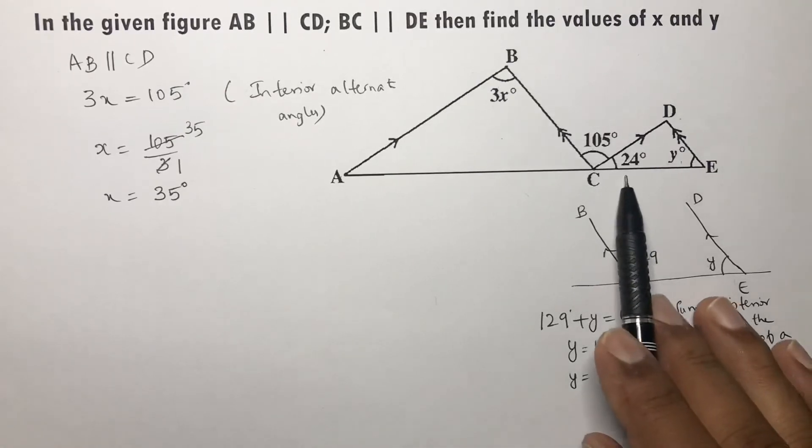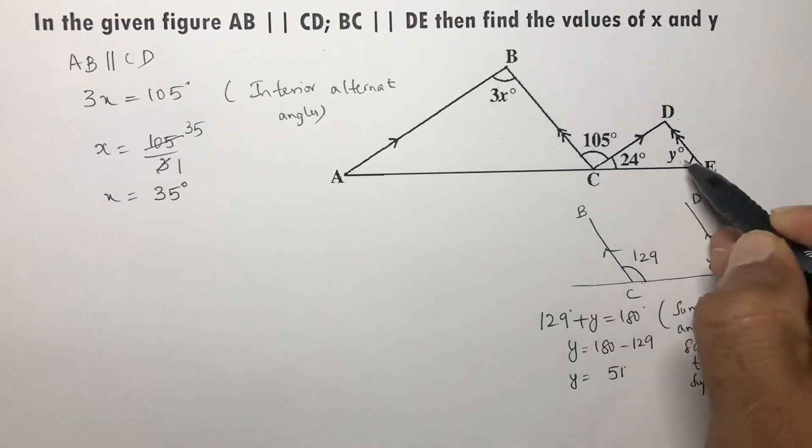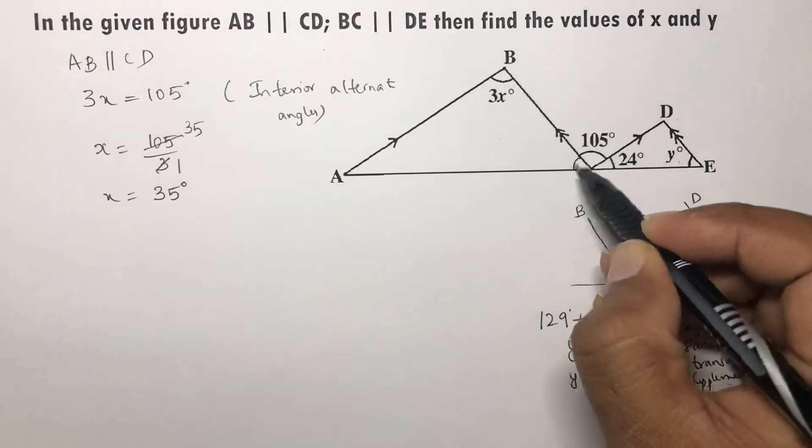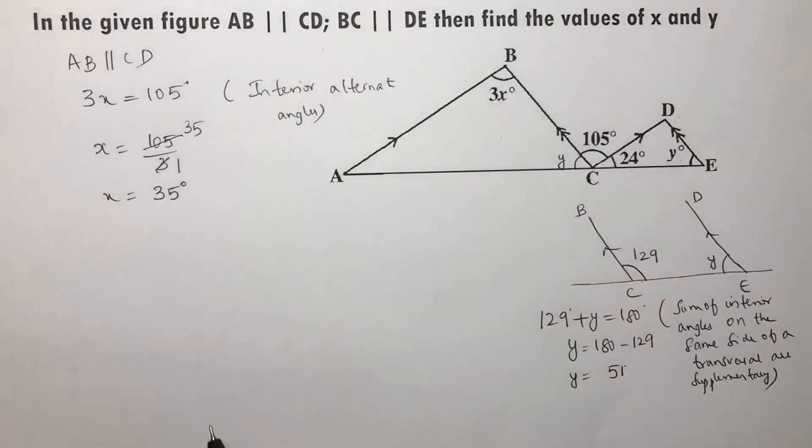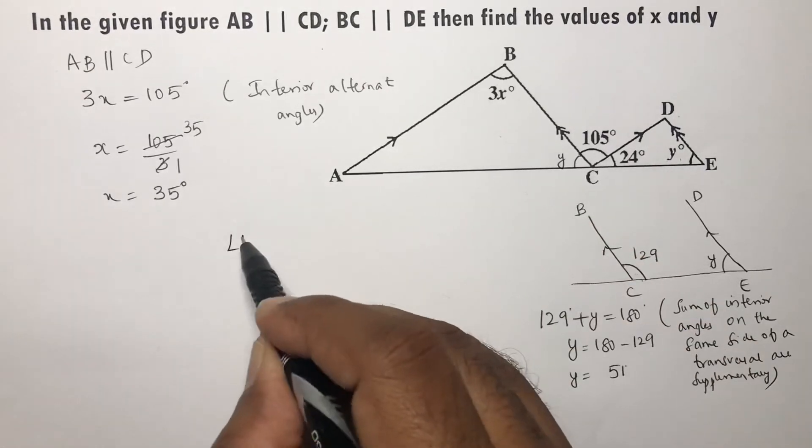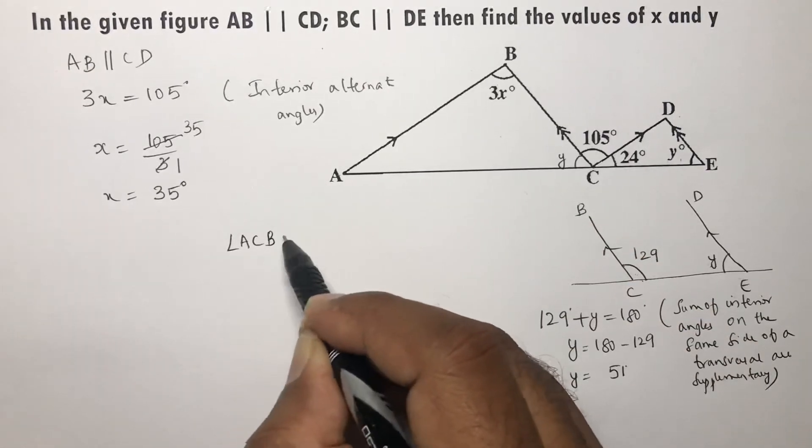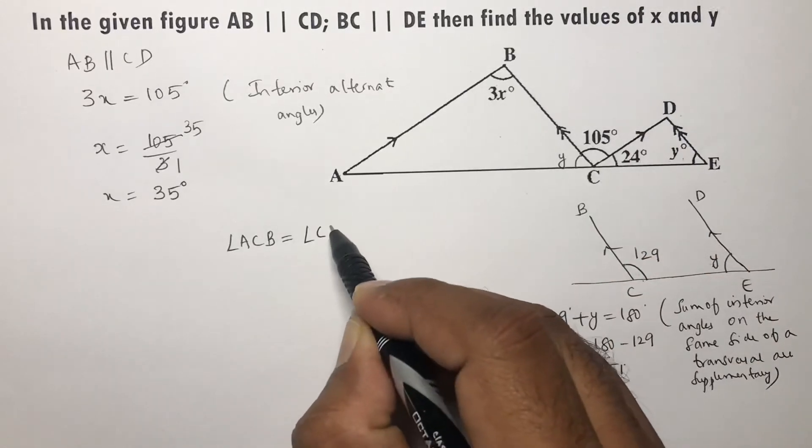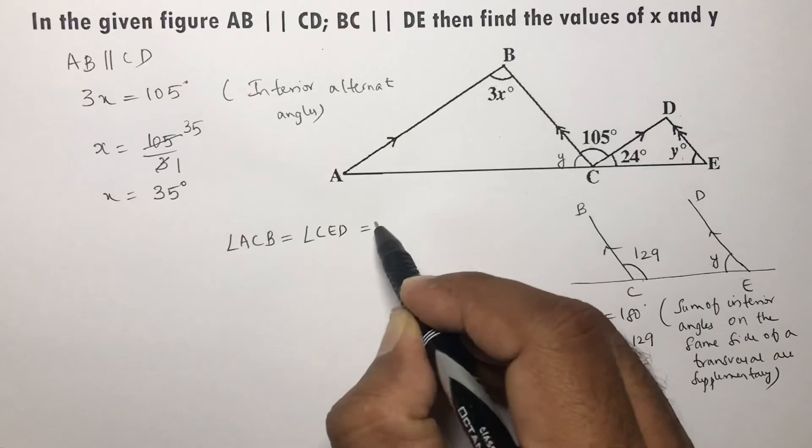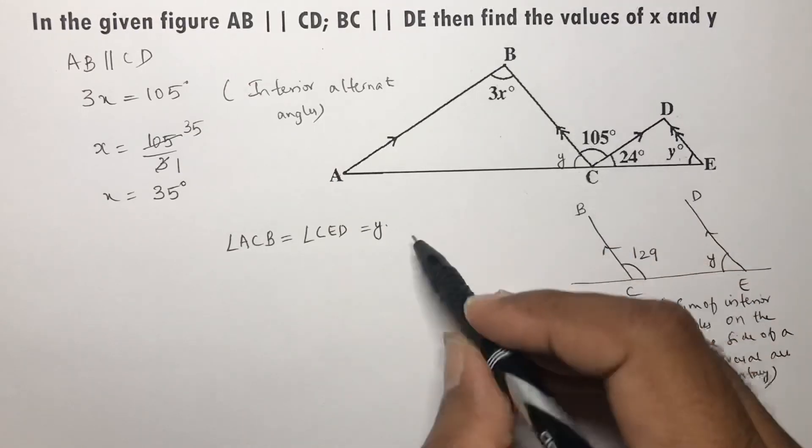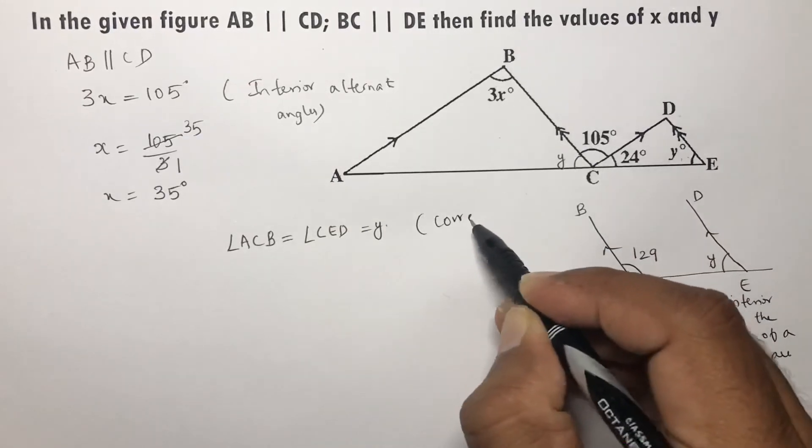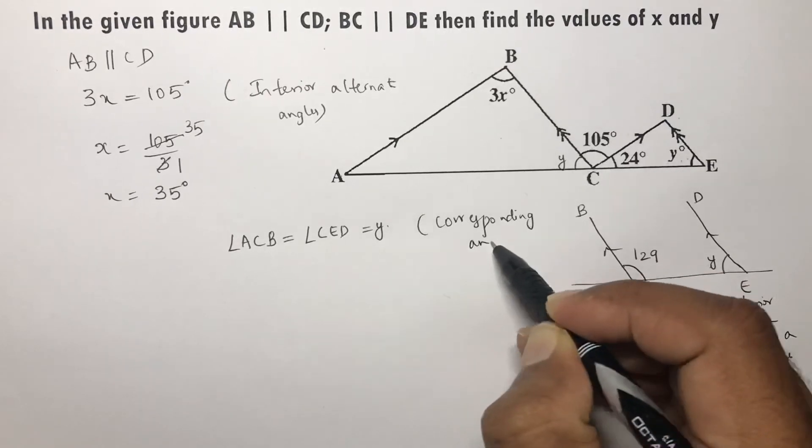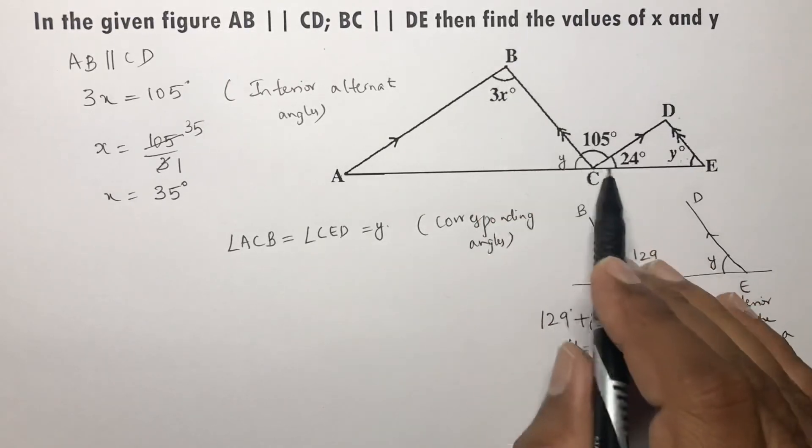You can do this in another method. If this angle is y, since these two lines are parallel, this angle will also be y. Angle ACB equals angle CED, both equal to y, because of corresponding angles, since BC is parallel to DE.